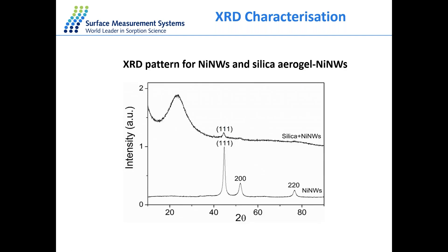The other characterization fingerprint technique generally used is X-ray diffraction. Here we look at the XRD of silica gel and silica gel with nickel nanowires. First, there is a broad peak around 25° 2θ attributable to amorphous silica, and then a 111 peak attributable to nickel nanoparticles. The XRD of nickel nanowires in silica aerogels confirms we are capturing the correct phase of the catalyst material.